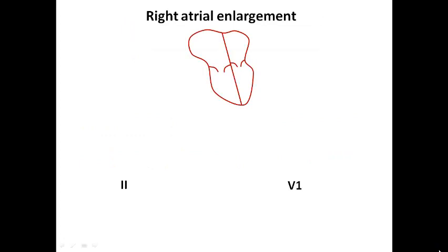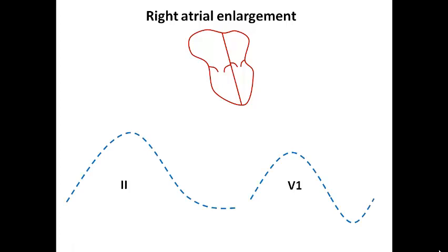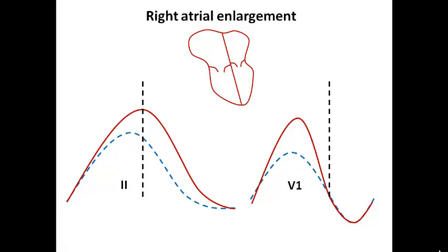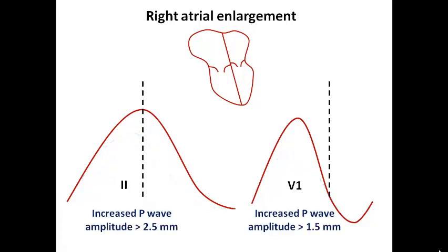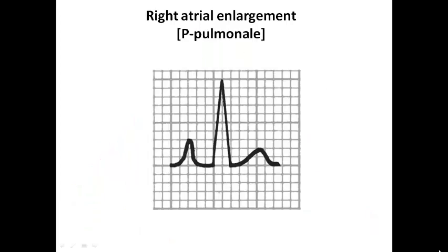Now moving to right atrial enlargement. Here the pathology is only in the right atrium, so only right atrial depolarization is affected. Using the same vertical line, right atrial depolarization is accentuated while left atrial depolarization is unchanged. This leads to increased P wave amplitude in lead 2 without affecting duration, and increased amplitude of the positive deflection in V1 without affecting the negative component. So P wave amplitude becomes more than 2.5 mm in lead 2 and more than 1.5 mm in V1, with unchanged duration. This classic pattern is called P pulmonale.